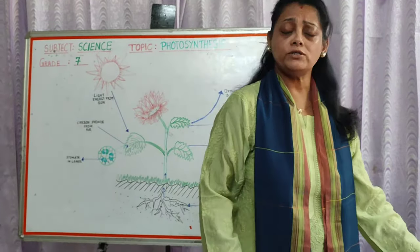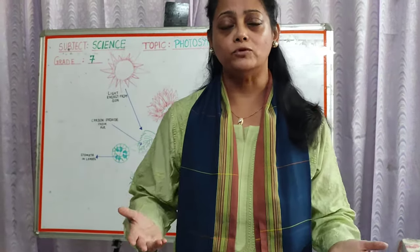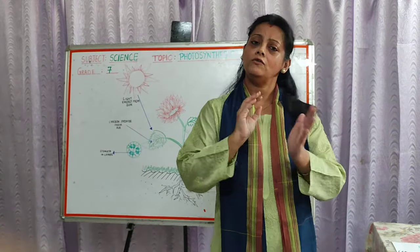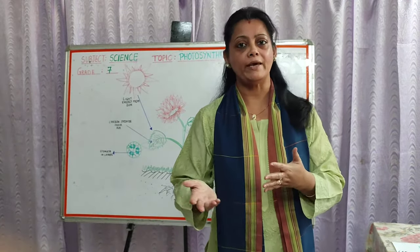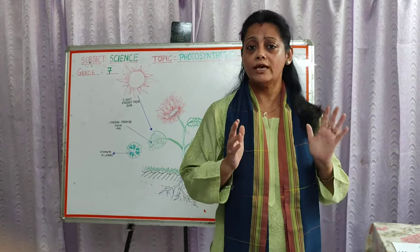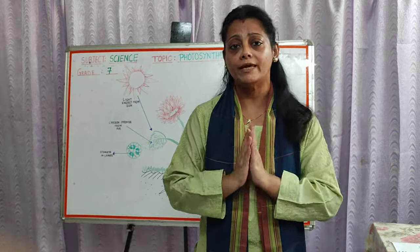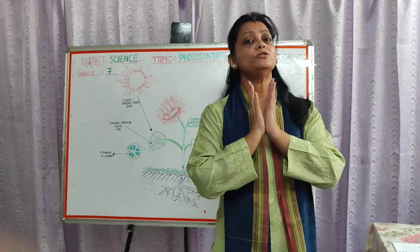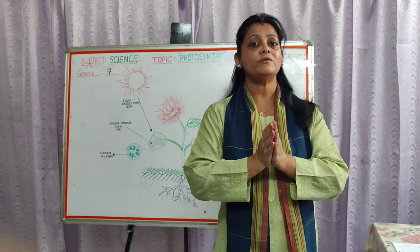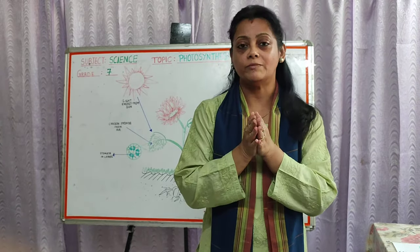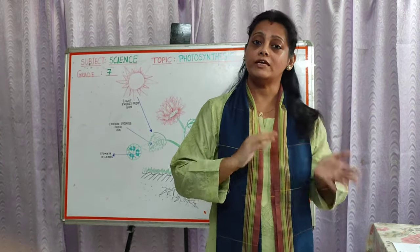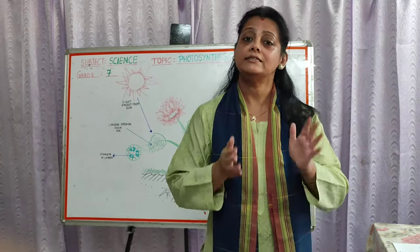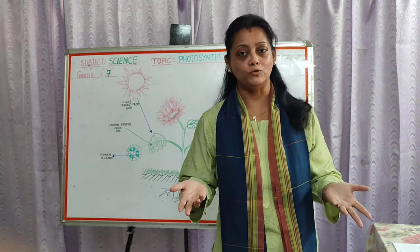Now the next question is: where do plants make their food? Like in our homes we have a kitchen where food is prepared. Plants also have a kitchen — and the kitchen of the plants are the leaves of the plant. We can also say the leaves are the food factory of the plants. That is where they make their food.